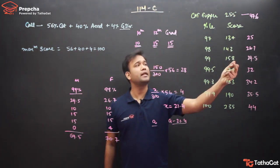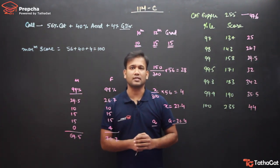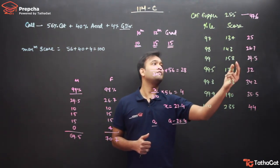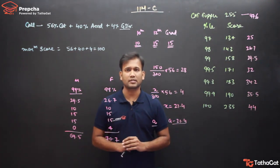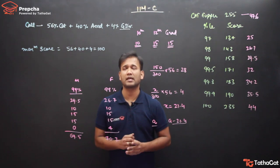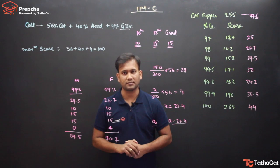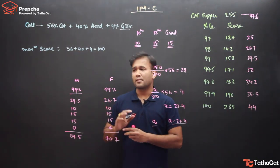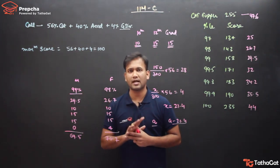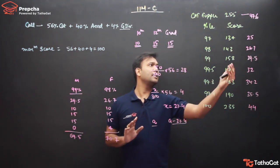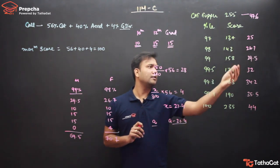If a male candidate scores 158, a female candidate at around 171 or lower can still surpass him overall. This is the advantage females have because of the 4 gender diversity marks. In summary, the female has almost 1.5 to 2 percentile advantage over a comparable male candidate.